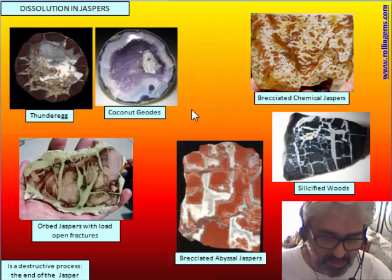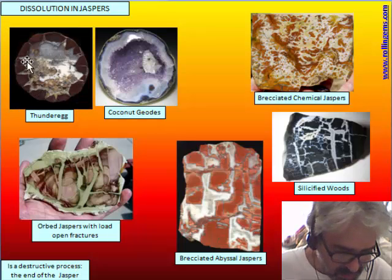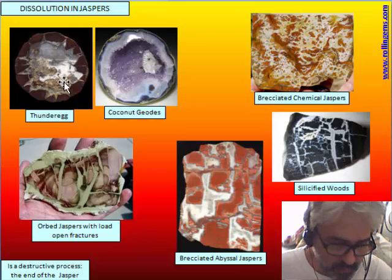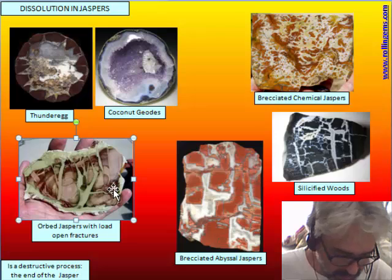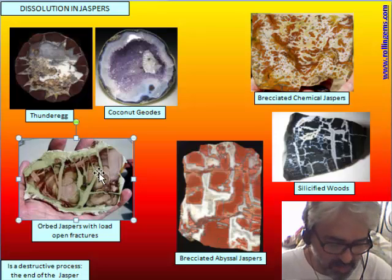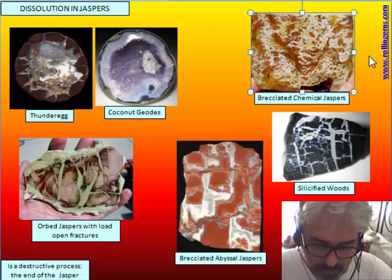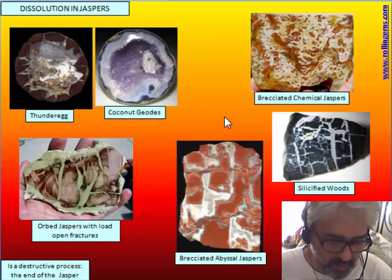The dissolution in jasper we have seen in a few phenomena. In Thunder Egg we see that there was too much void space to be explained only by loss of volume, and the complete dissolution of jasper is responsible for the formation of the void where coconut geodes are formed — the jasper is completely dissolved and new quartz crystallizes. We also see in orbit chemical jasper that when the fracture by load has an open space, it is probably caused by dissolution. And we see brecciated jasper made of chemical jasper, silicified wood, and also abyssal jasper — so this phenomenon is not so rare.